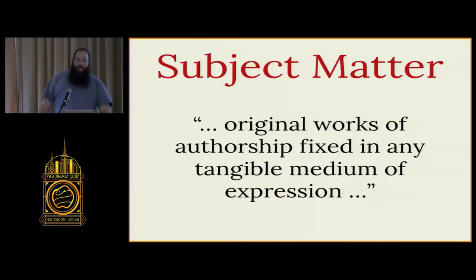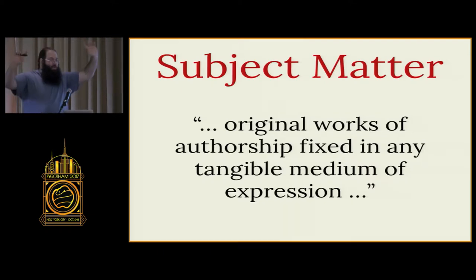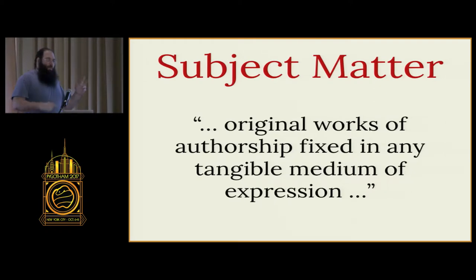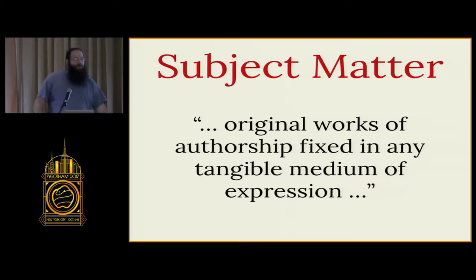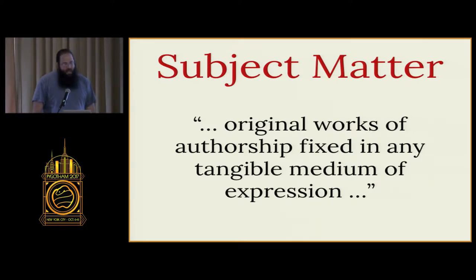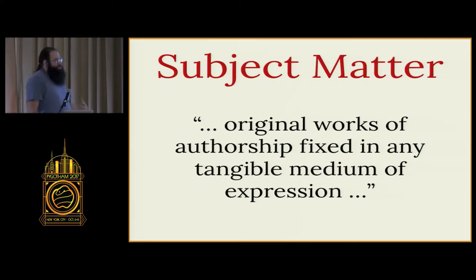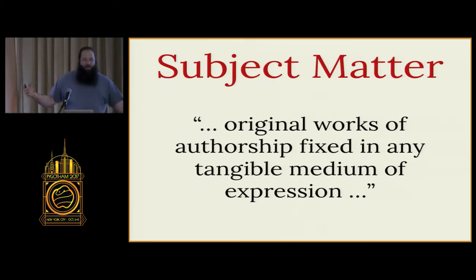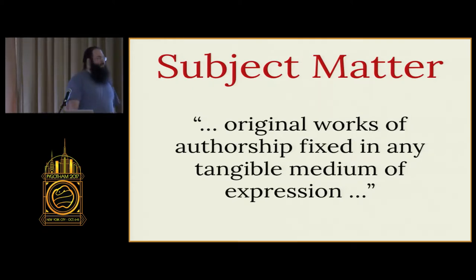In order to qualify for copyright, it has to meet three main qualifications. First, it has to be original — you were the person that created it, you're not getting it from somewhere else. Second, it has to be what's called a work of authorship. There's a long list of categories, but generally in technology we'll only see two: literary works and graphic works. And third, it has to be fixed in a tangible medium — meaning you cannot copyright a dance performance because that's not tangible, but you could copyright a video of it or a script of it.